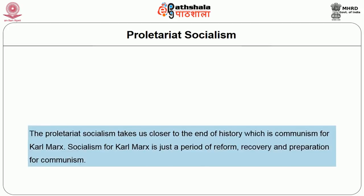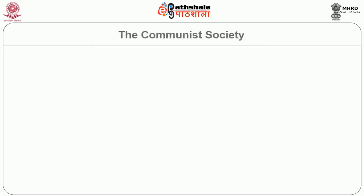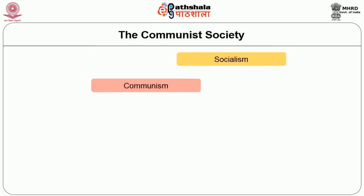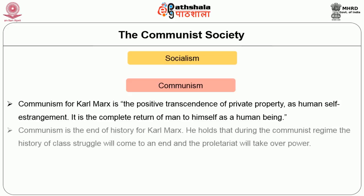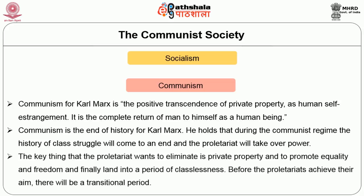Finally, proletariat socialism takes us closer to the end of history — which is communism for Marx. Socialism for Karl Marx is just a period of reform, recovery and preparation for communism. Communism is the positive transcendence of private property as human self-estrangement and the complete return of man to himself as a human being. Communism is the end of history for Marx. During the communist regime the history of class struggle will come to an end and the proletariat will take over power. The key is that the proletariat wants to eliminate private property and promote equality and freedom, finally leading into a period of classlessness.